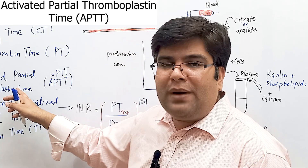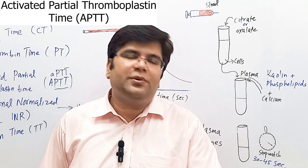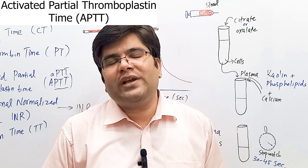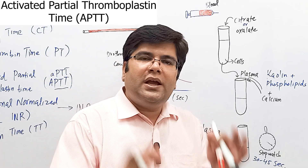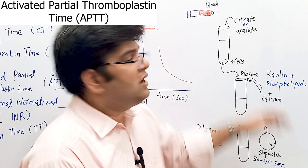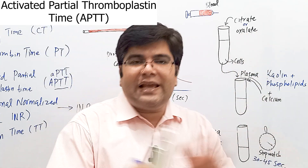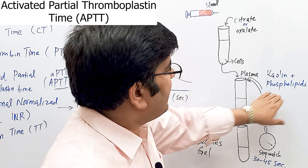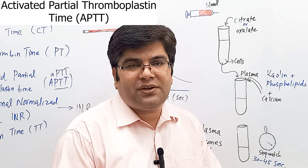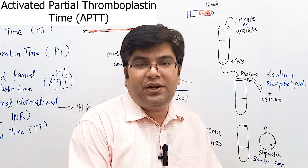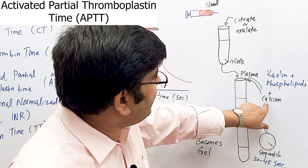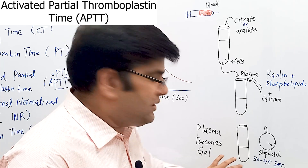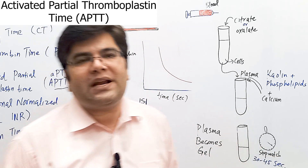The next test is activated partial thromboplastin time (APTT or PTT). Blood is anticoagulated with citrate or oxalate, then centrifuged to obtain plasma. Very high concentrations of calcium, phospholipids, and kaolin — which acts as a surface activator similar to collagen, while phospholipids substitute for platelets — are added into this plasma to activate the intrinsic pathway. Calcium nullifies the anticoagulant. The total time taken for the plasma to clot is called the activated partial thromboplastin time.